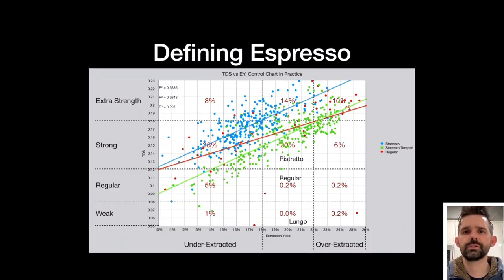So most definitions of espresso come down to a certain amount of coffee in, a certain amount of coffee out, and in a certain amount of time. I like to define espresso by strength and extraction yield. So this is that same control chart with a bunch of my data plotted on there and some general definition buckets of what a ristretto or regular or lungo are for espresso. I think that this is a better way to define and be able to compare espresso that is much more quantitative.